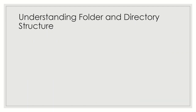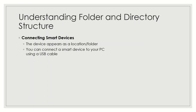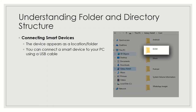When you connect a smart device to a computer — for example, your mobile phone — the device appears as a location or folder. You can connect a smart device to your computer using a USB cable, usually for the purpose of copying or moving files from the device to your computer. Once connected, you can navigate its internal storage system just as you would a folder within your computer. The following picture shows part of the internal storage system of an Android device connected to a computer.